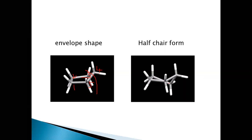When we look at the half-chair conformation, one carbon is above the plane and another carbon is below the plane of the molecule. There is relief from the torsional strain to a certain extent, but still the hydrogens on the other carbon atoms that are in the plane of the molecule still face eclipsed conformation — torsional strain because of the eclipsed conformation of the hydrogens on those three carbon atoms.